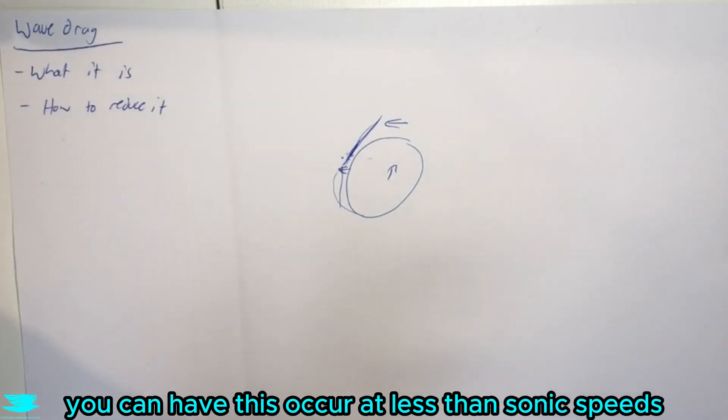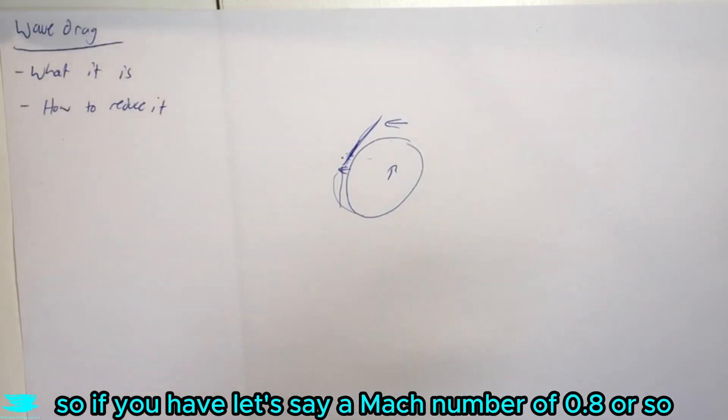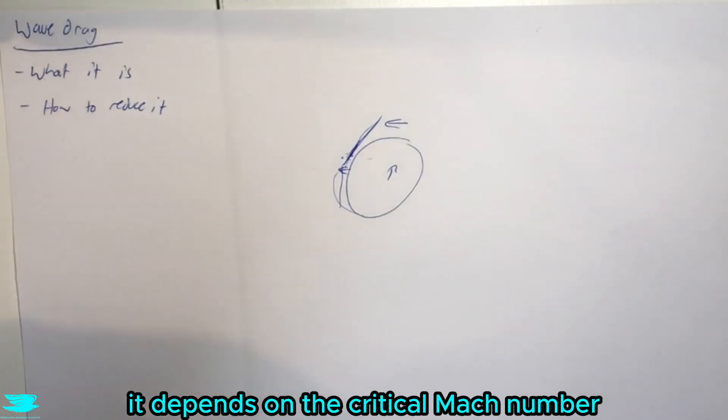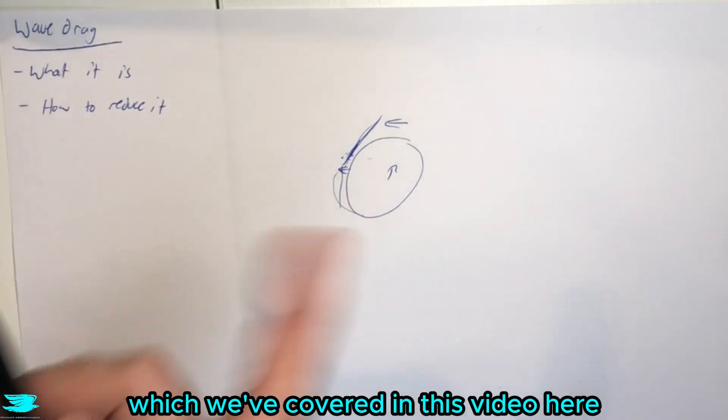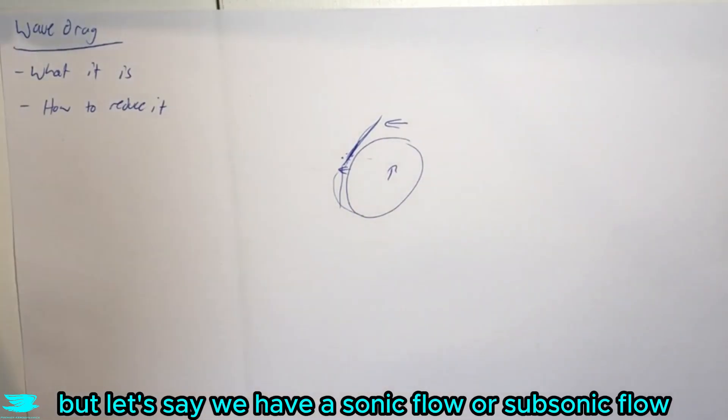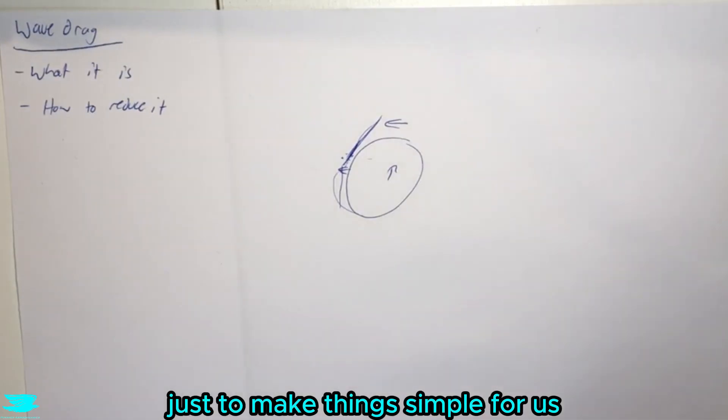And technically you can have this occur at less than sonic speeds, so if you have let's say a Mach number of 0.8 or so, it depends on the critical Mach number, which we've covered in this video here. But let's say we have a sonic flow or supersonic flow just to make things simple for us.